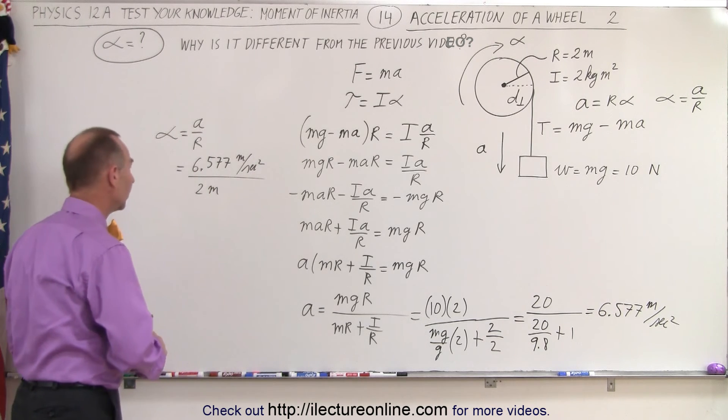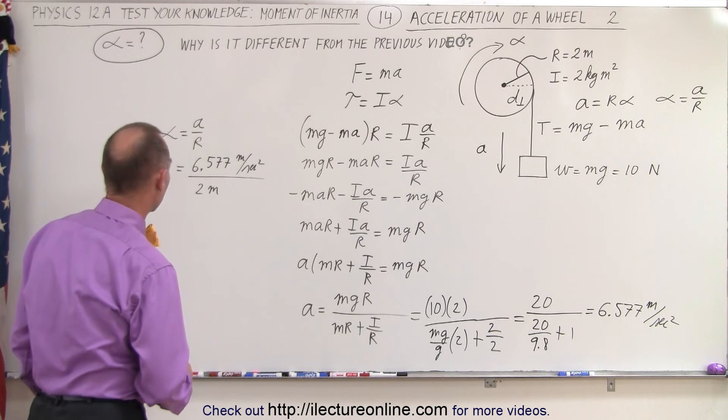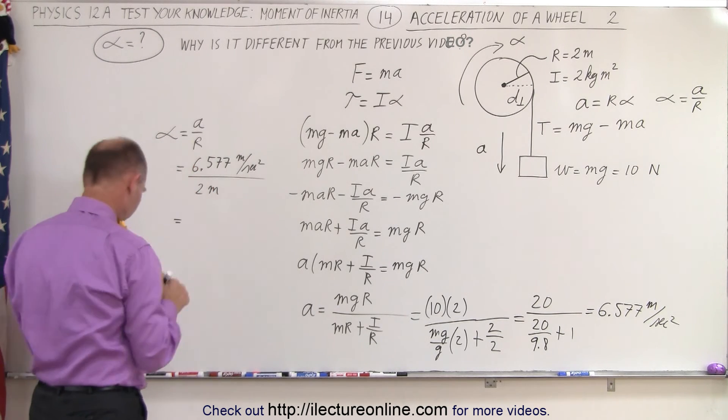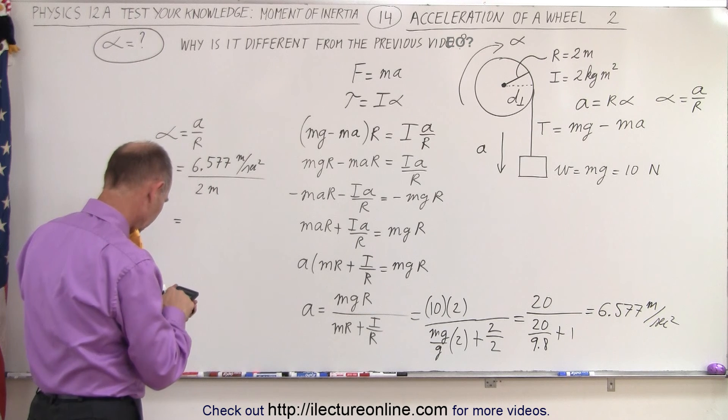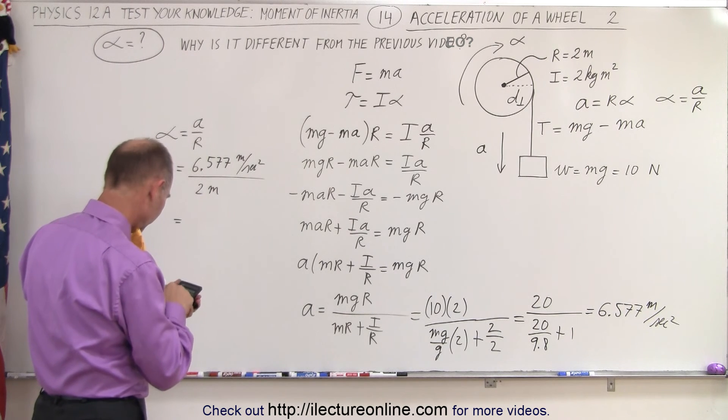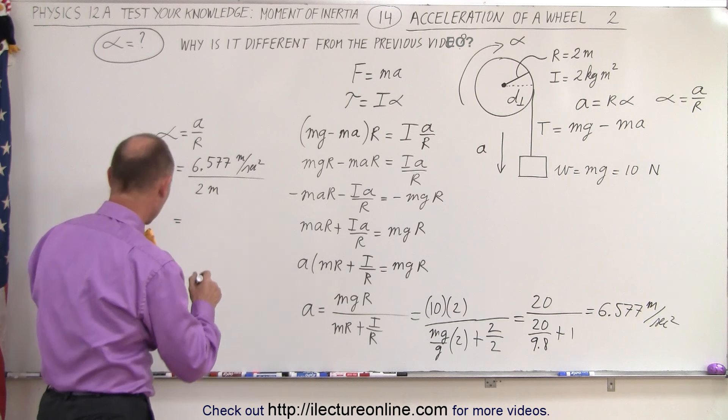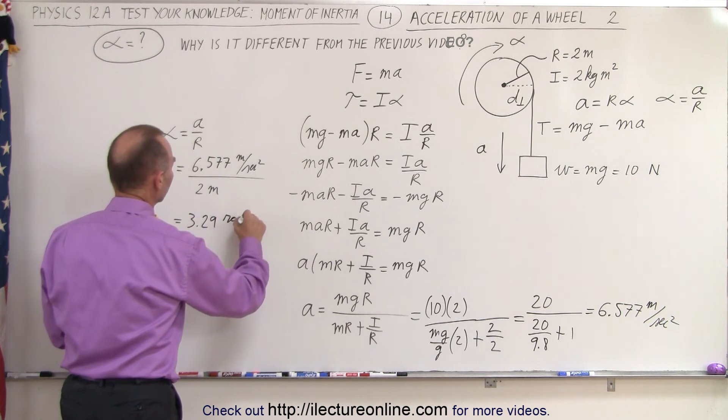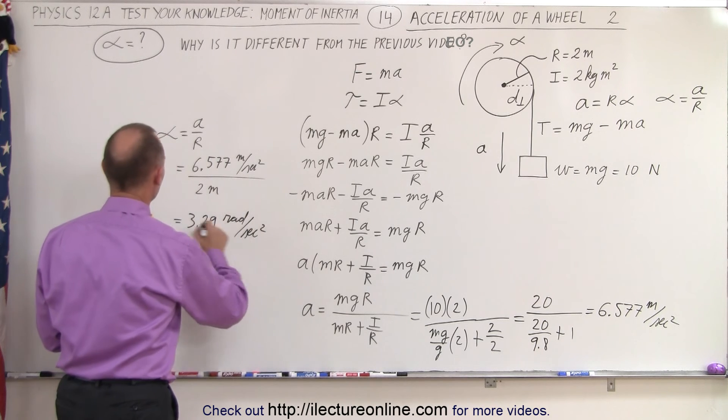Okay, let's see here. That's 6.577 divided by 2, which equals 3.29 radians per second squared.